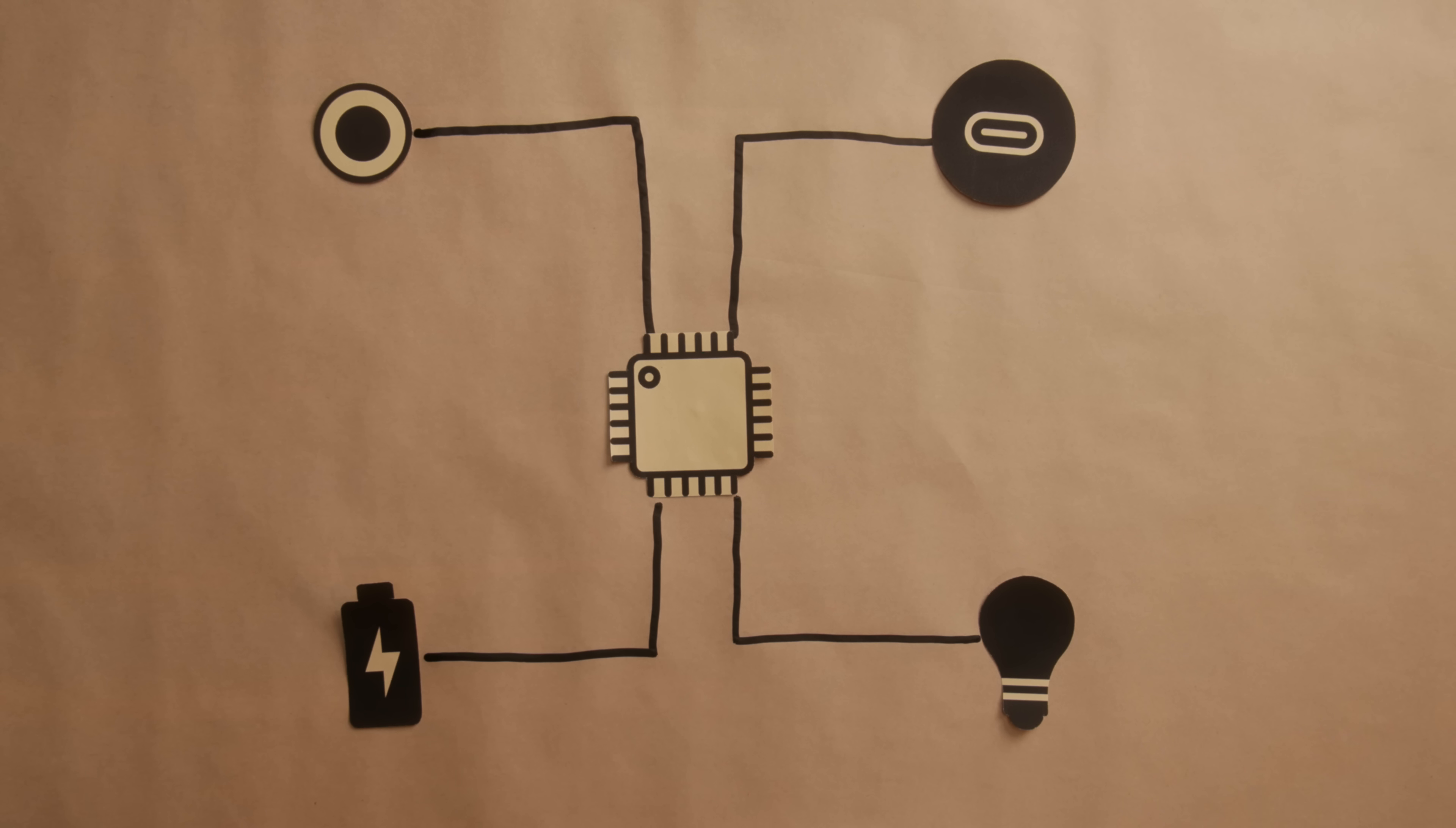We can't connect the LEDs directly to the output pins on the ESP though. Instead, we'll need to use something in between, like a MOSFET, to switch the higher current required for the LED lights. Think of a MOSFET as a tiny electrically controlled switch.